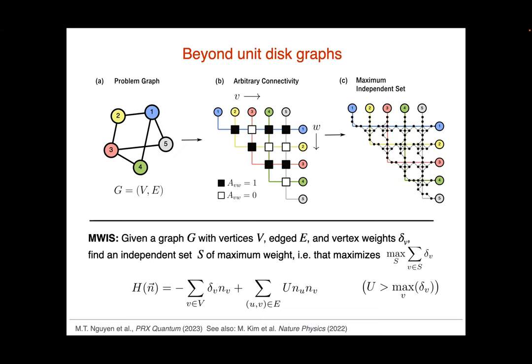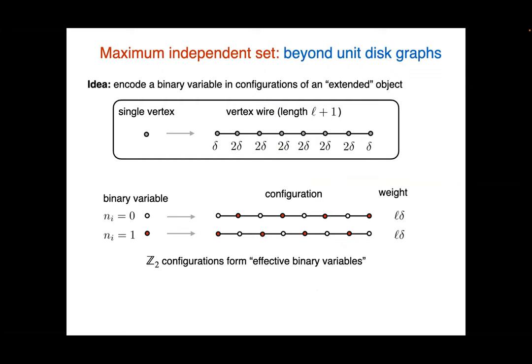The idea is to go from the paradigm of maximum independent sets to maximum weight independent sets. For each vertex of your graph, you assign a weight, and then you look at the corresponding cost. In terms of Rydberg atom arrays, this is essentially a local detuning term instead of a global detuning term. You want to maximize the total weight and minimize the energy of this Hamiltonian. The first key thing if you want to go beyond unit disk graphs is to represent your binary variable as an extended object rather than a single vertex.